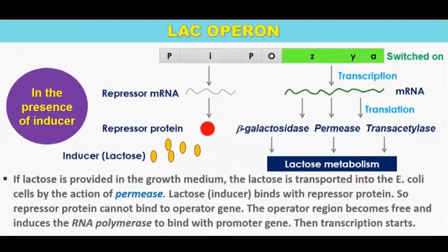Opposite to this, in the presence of inducer — if lactose is provided in the growth medium — the lactose is transported into the E. coli cells by the action of permease. Lactose binds with the repressor protein, so the repressor protein cannot bind to the operator gene. The operator region becomes free and induces RNA polymerase, and in this way transcription starts. In the first case there was no transcription, no gene expression; but when the inducer is present, transcription is present and translation is present.